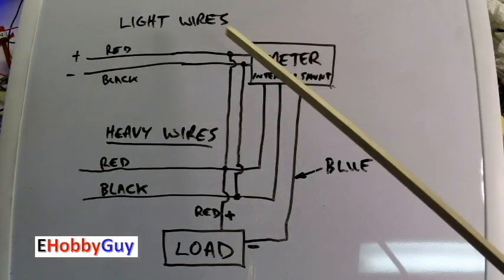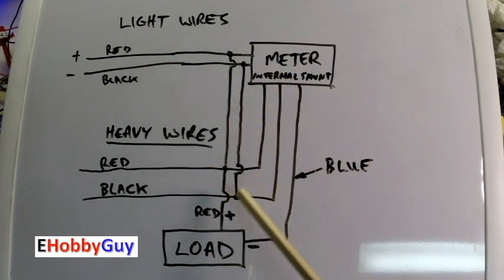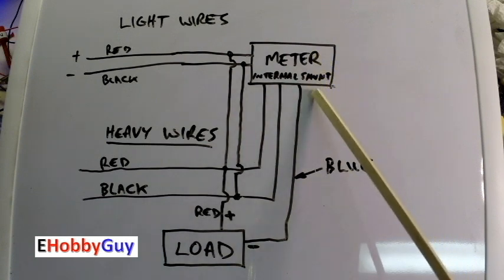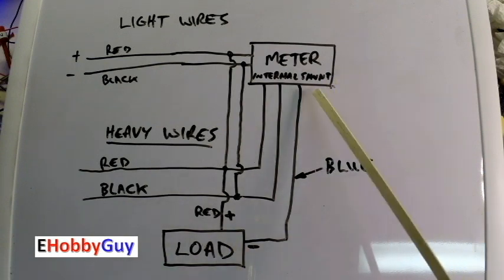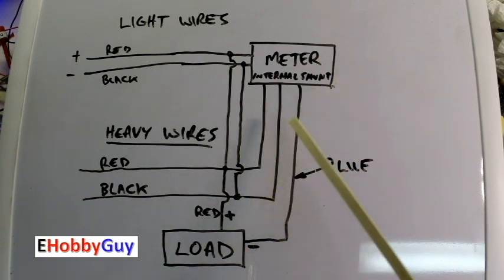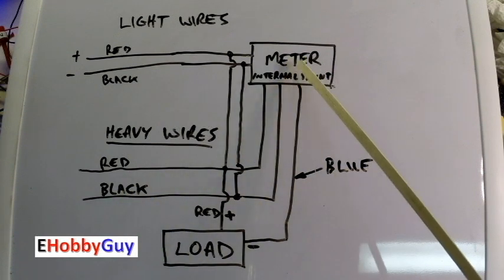So just in quick review, two reds are tied together, two blacks are tied together. To give your load voltage, if you want to get a current reading, tie the red to your load as the positive, but bring the negative through the meter. The negative is going to come from the heavy black into the meter and come out the blue.